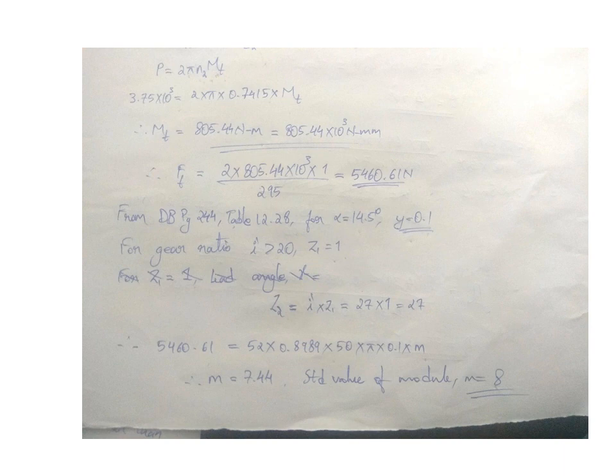By that we get the number of teeth on worm gear as i times 1, 27 times 1 equals 27. So now we have all the values and can find the module as 7.44, standard value of module as 8.